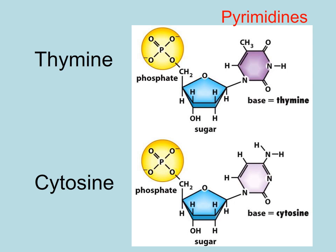Thymine and cytosine have nitrogenous bases that are pyrimidines. Pyrimidines have only one ring. Thymine has two oxygens attached to its ring, while cytosine has only one.